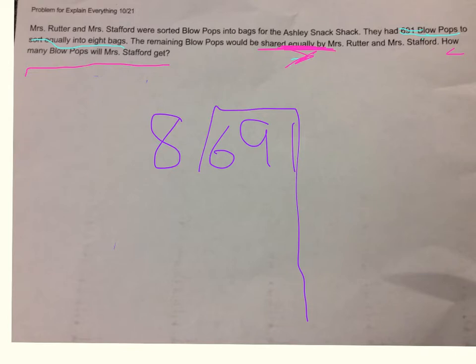We can do 60 times 8, which is 480. Then we subtract and we still have 211 blowpops left.